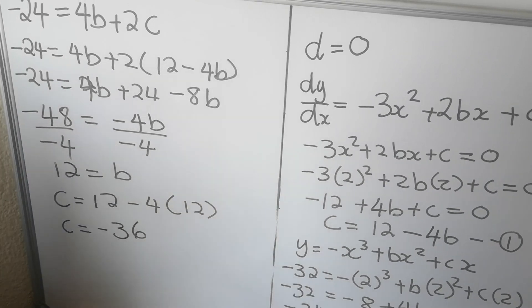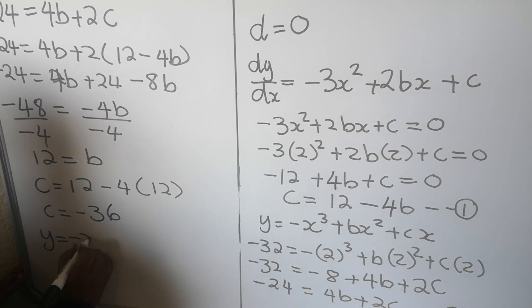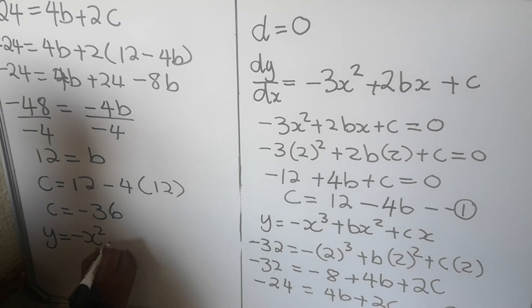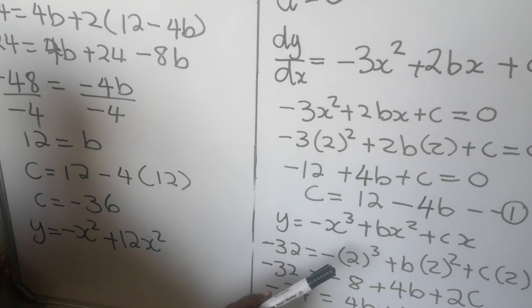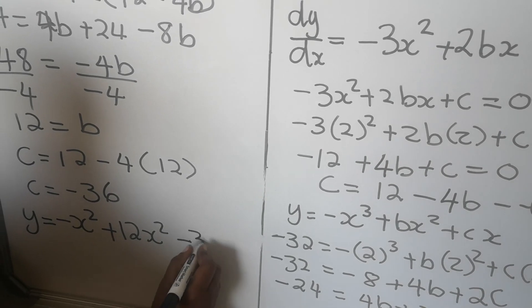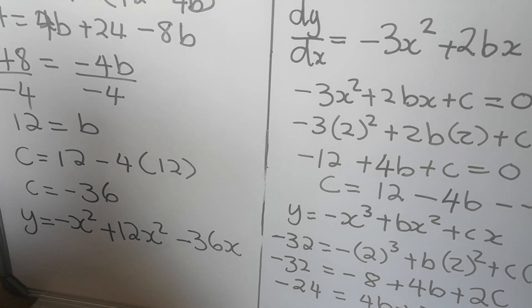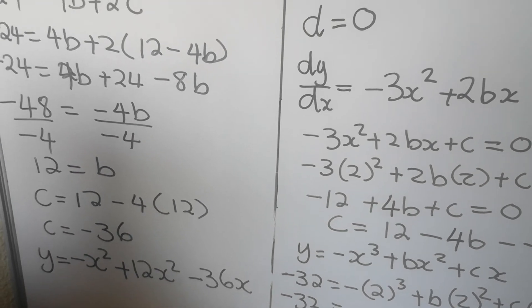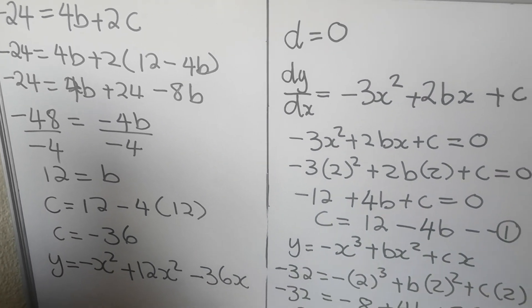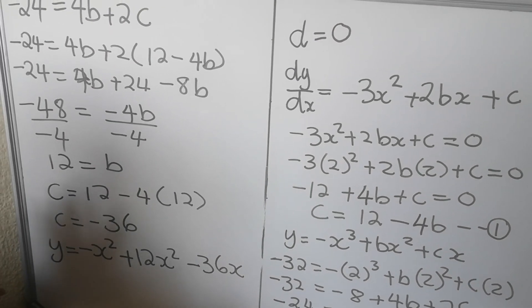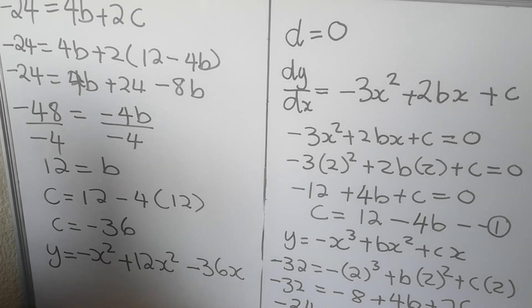So the final equation is y equals minus x cubed plus 12x squared minus 36x, and d is 0 so it is not written. You really need to practice. In an exam, don't learn just one method — look at what you are given, whether intercepts or a turning point, because what you're given determines the kind of formula you use. This is the end of our lesson. Thank you for watching. Please subscribe.